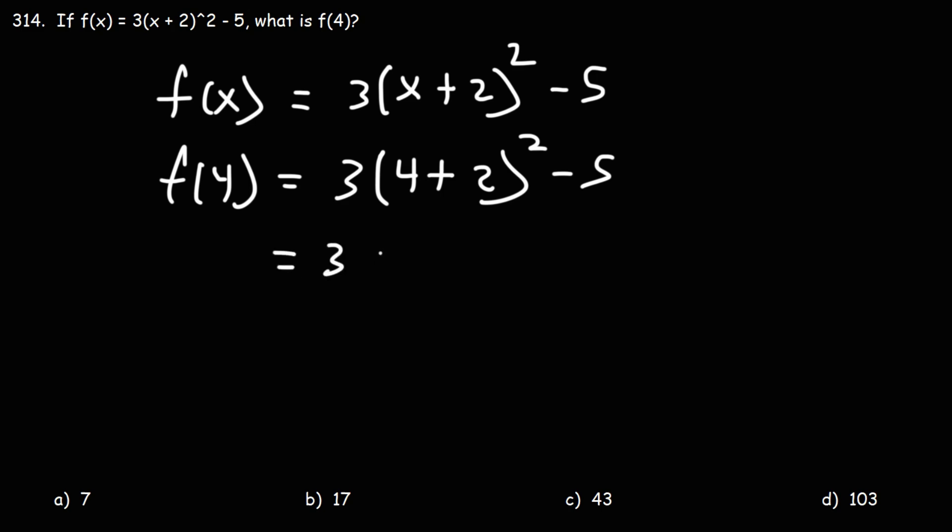So let's use the order of operations and work on the inside part within the parentheses. 4 plus 2 is 6. 6 squared, 6 times 6, that's 36.